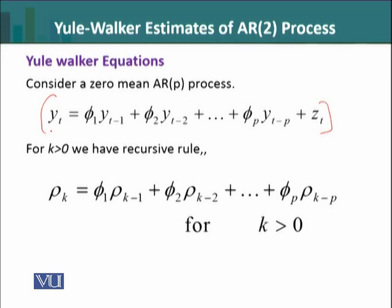We have the p parameters phi 1, phi 2 up to phi p, and the rule which relates the process autocorrelations with the AR parameters is given over here. So we can list the p Yule-Walker equations using this rule by putting k equal to 1 up to p.